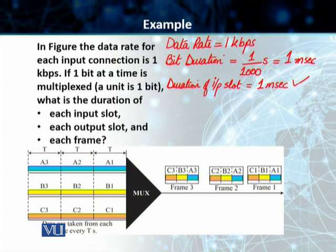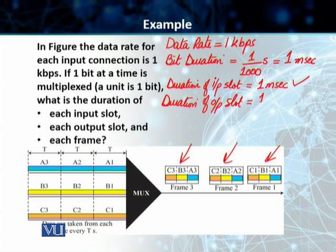We are trying to create frames of 3 time slots each, so our duration is going down by 3 times, so T divided by 3, and therefore in this case, the duration of the output slot is duration of the input slot divided by 3, so 1 by 3 milliseconds.